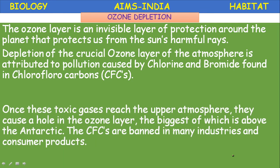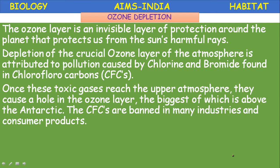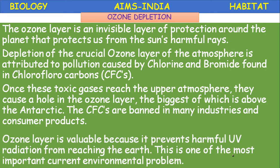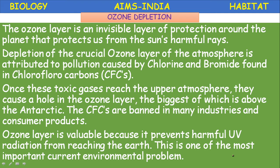Once toxic gases like CFCs reach the upper atmosphere, they cause a hole in the ozone layer, the biggest of which is above the Antarctic region. Chlorofluorocarbons are banned in many industries and consumer products. The ozone layer is valuable because it prevents harmful ultraviolet UV radiation from reaching the earth.